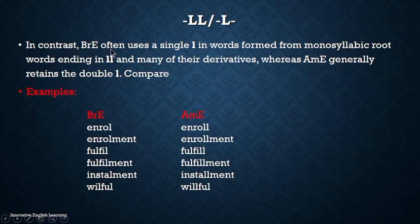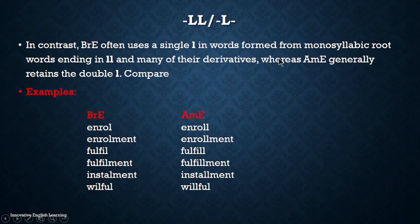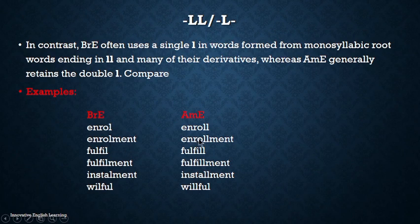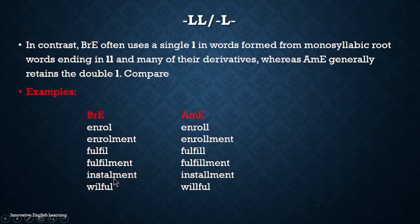In contrast, British often uses a single L in words formed from a monosyllabic root word ending in double-L, whereas American generally retains the double-L. For example: enrolment (single-L in British) vs. enrollment (double-L in American); fulfil vs. fulfill; fulfilment vs. fulfillment; instalment vs. installment; wilful vs. willful.